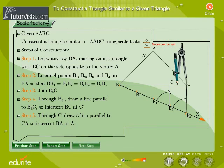Step 5: Through C', draw a line parallel to CA to intersect BA at A'.